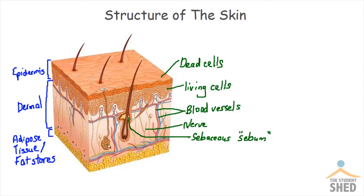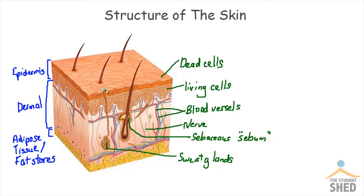We also have sweat glands in the dermal layer. The sweat glands are responsible for producing sweat, which travels up through the sweat duct or sweat tube and exits out through the pore.